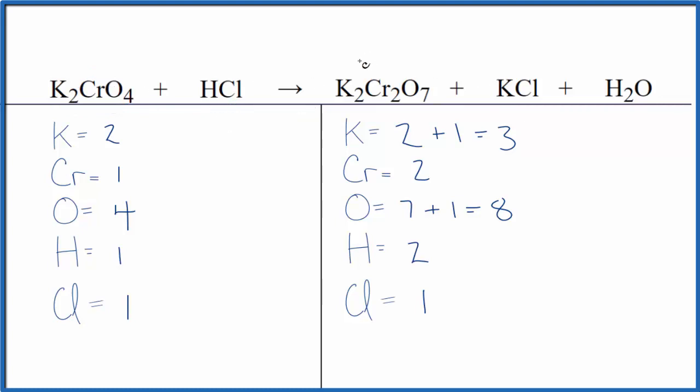So to balance the equation here, we need to count all of the atoms up, and I've already done that. The thing to be careful of, here in the products we have two potassium atoms here and one here, so two plus one gives us three. So we have three potassium atoms, and then for oxygen we have seven here and one here. Seven plus one, that gives us eight oxygen atoms. So you have to count those up correctly to balance the equation.